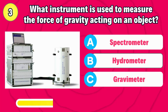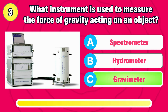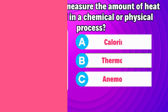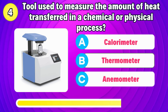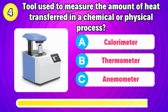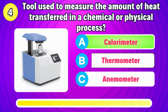What instrument is used to measure the force of gravity acting on an object? Correct answer is gravimeter. What tool is used to measure the amount of heat transferred in a chemical or physical process? That's right, it's calorimeter.